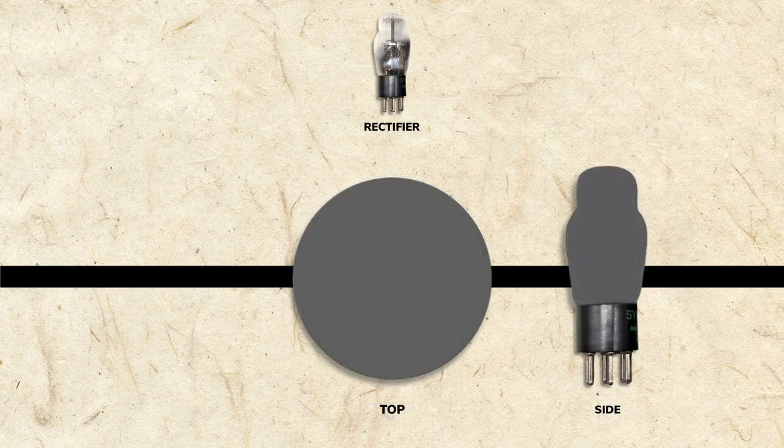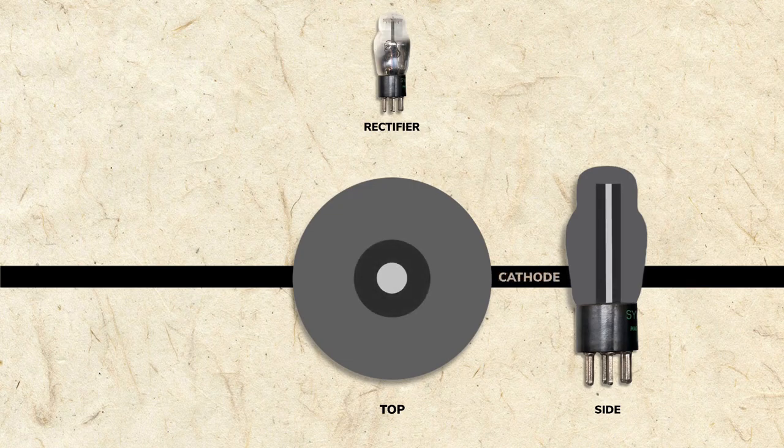Inside the tube are three main elements: a filament, a cathode, and a plate.